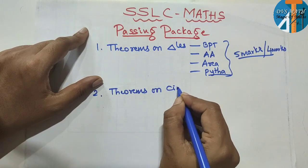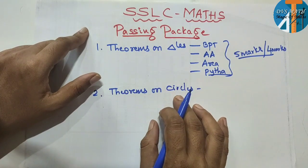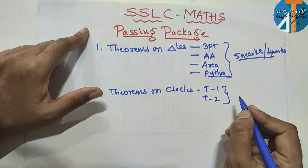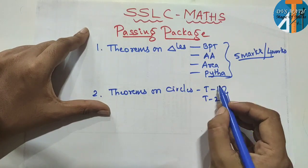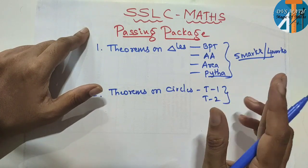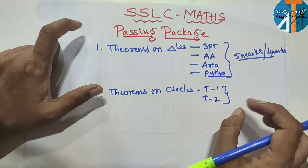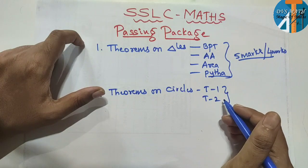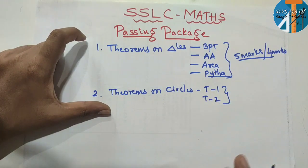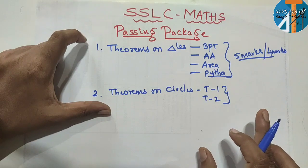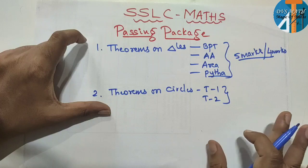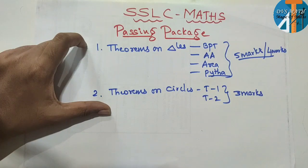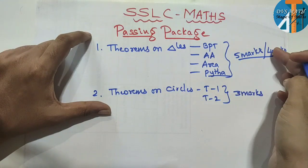Theorems on circles. We will say two theorems: Theorem 1 and Theorem 2. This is what I have done in the previous video. You must read this as a theoretic method. Every time you may choose the same question; you should read the theorem. You must understand the theorem — you will remember the two. It is easy to use 3 marks. So 5 plus 3 is 8, and 4 plus 3 is 7.